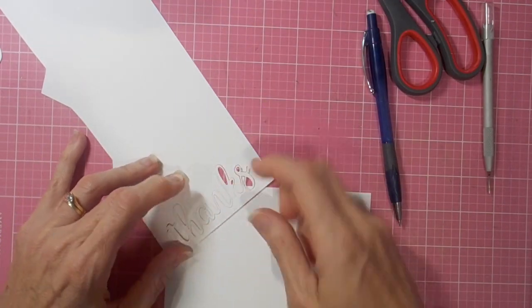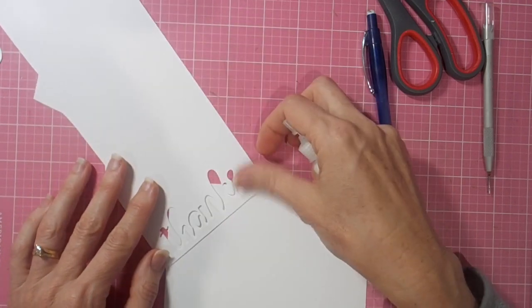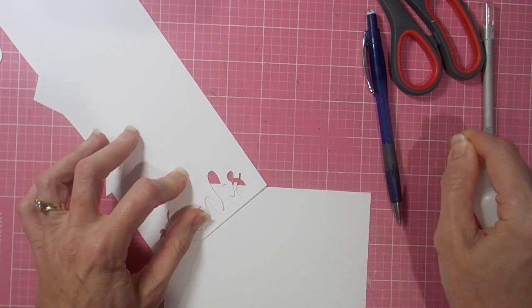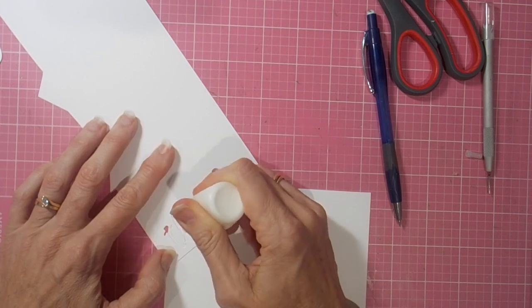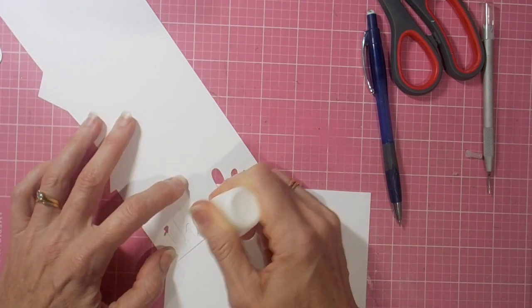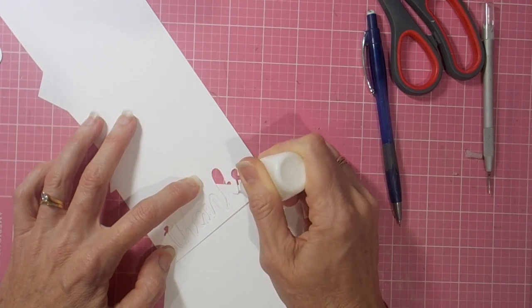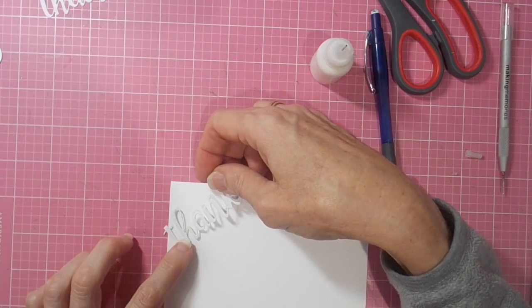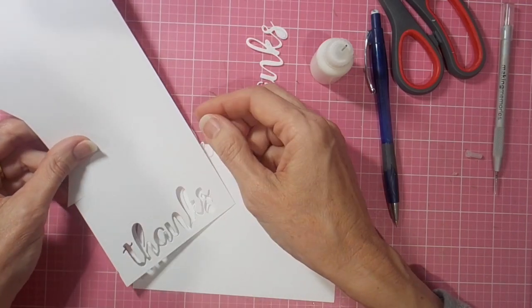I'm going to stick all my little white die cuts, so I've worked out where it's going to go, the angle I want it to be at, and of course the placement of the first thanks. Now I'm just using my fine tip liquid adhesive applicator to get a fine line of glue. Then I can remove my little template and I can stick the first die cut word down.